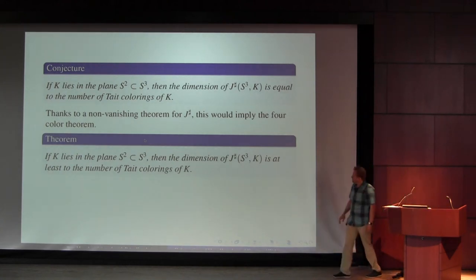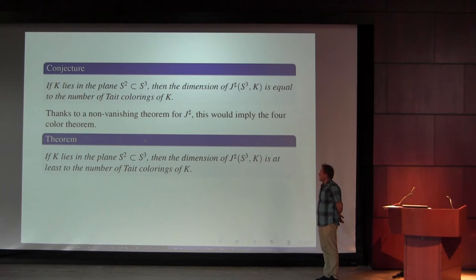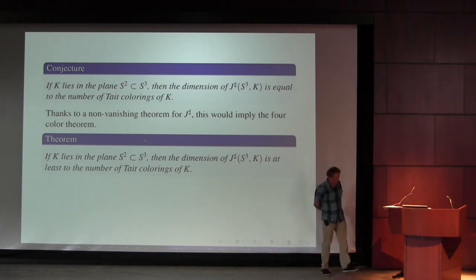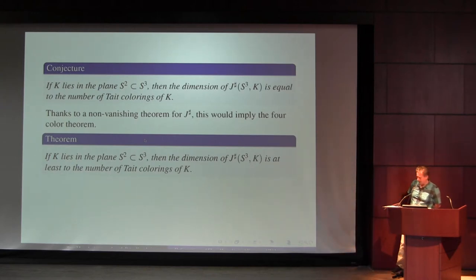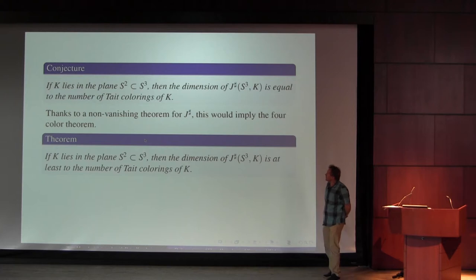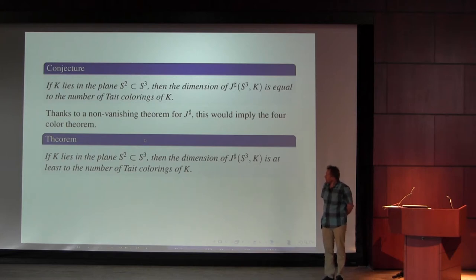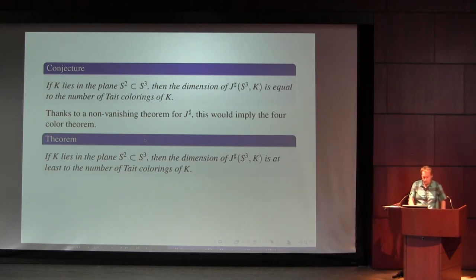What I'm going to sketch is a proof of the sort of uninteresting part of the conjecture: that the dimension of J-sharp of K is at least the number of Tate colorings. If it was at most the number of Tate colorings, then I'd be much happier. But at least the theorem shows that, for many planar graphs the conjecture is true, and at least it's very tightly constrained by the number of Tate colorings for all graphs.